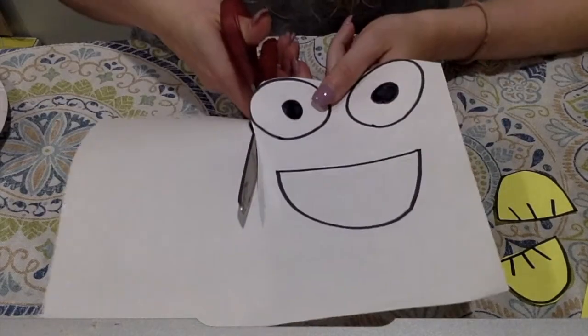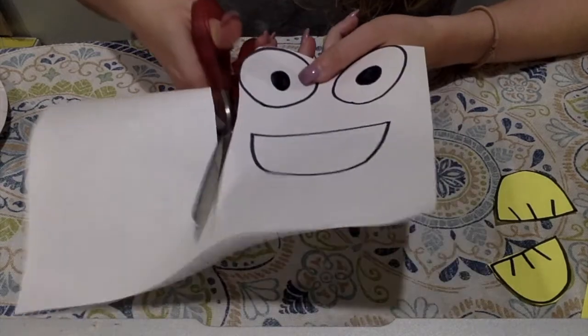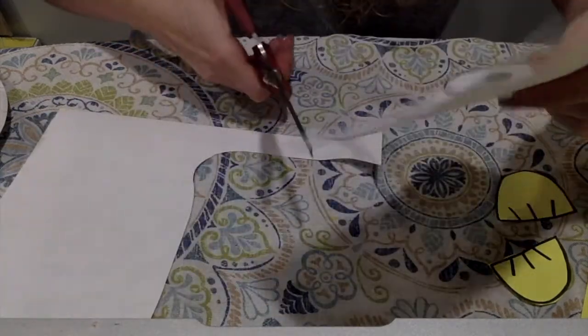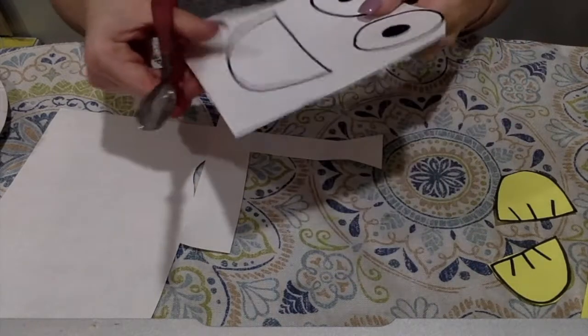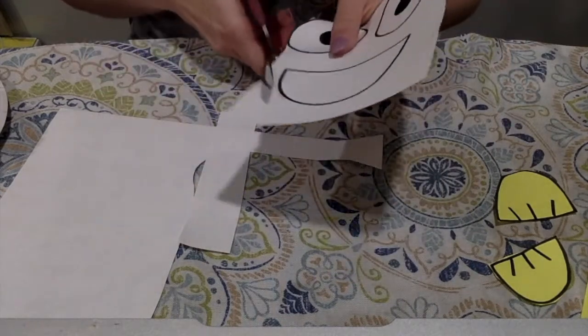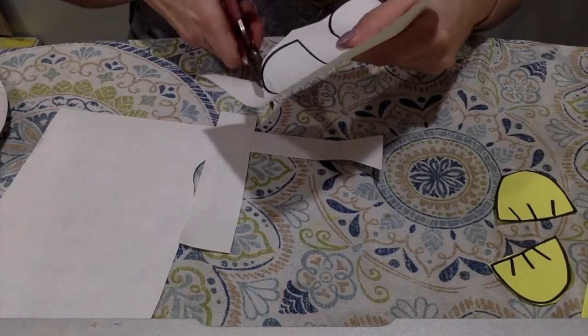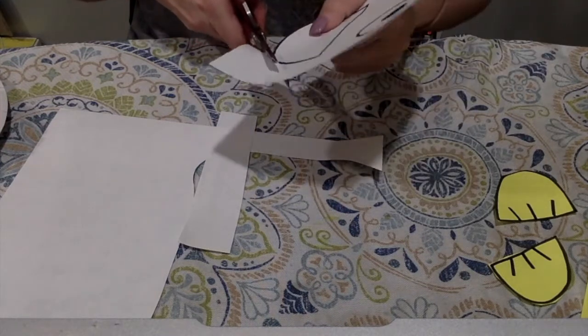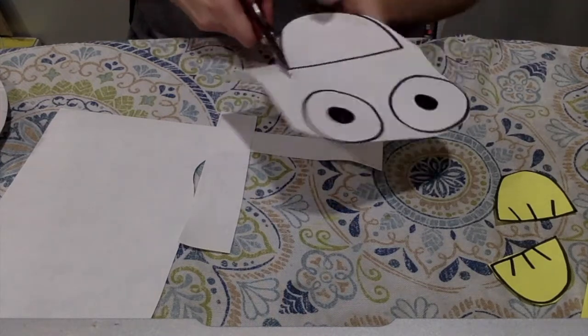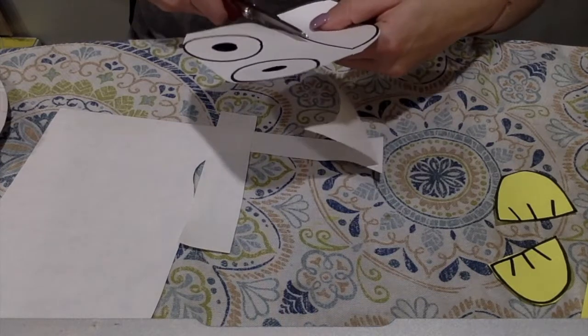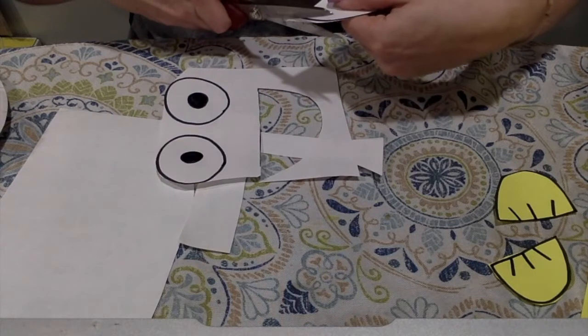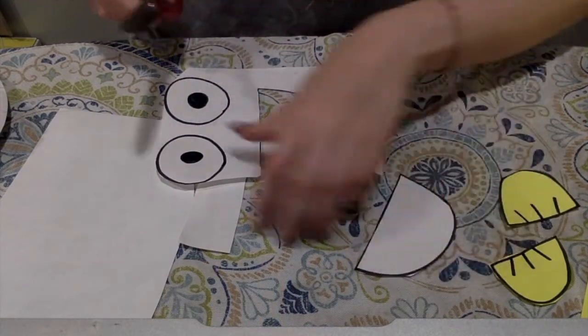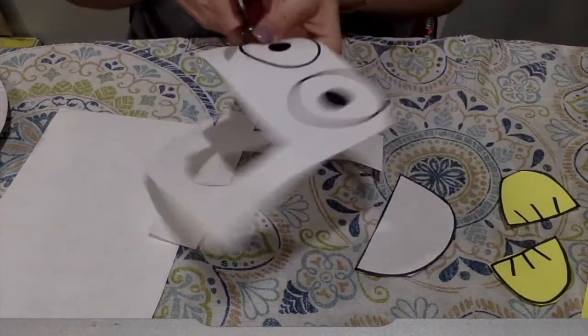So in learning to use scissors, it might also be beneficial to cut away the extra paper, just to make the paper a little bit smaller and easier to manipulate when you're trying to rotate the paper and use the scissors without the extra paper getting in the way. So the mouth is done and now I just have two eyes left to cut.